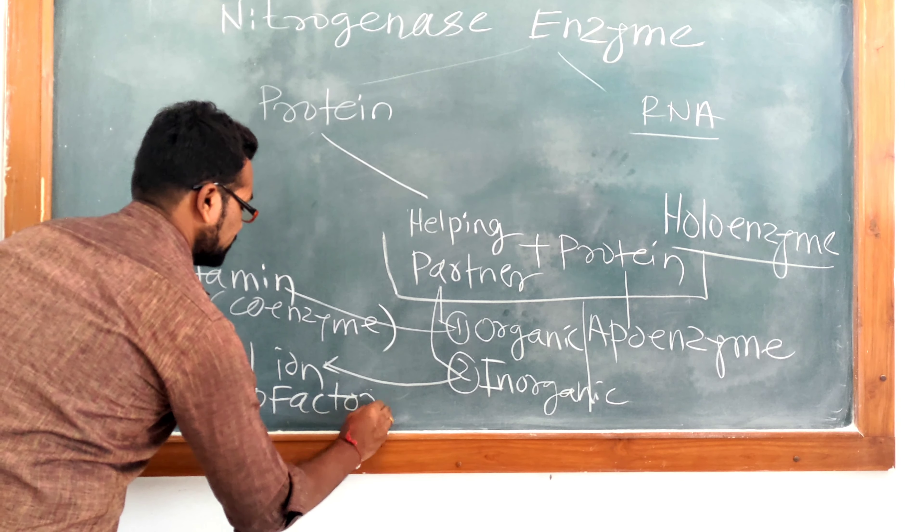Please understand this carefully: protein-based enzymes sometimes require a helping partner. The combination of the helping partner and protein is known as a holoenzyme; the protein component is the apoenzyme. Both co-enzyme and co-factor are helping partners, but in biochemistry they are called a prosthetic group. So in a holoenzyme you will have the apoenzyme and a prosthetic group present.